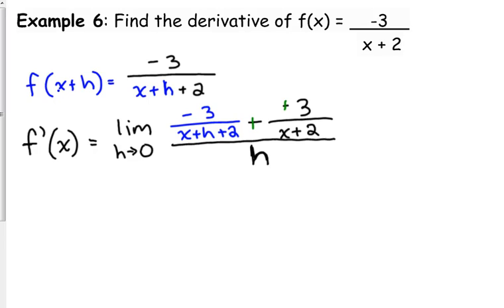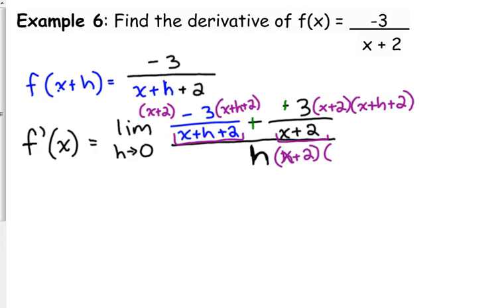Now, do y'all remember what we did when we had to do these limits? If we plug in 0 right now, we're going to end up with 0 over 0. It's a complex fraction. So, we need to multiply by the LCD. The LCD here is kind of big because we've got x plus h plus 2 and x plus 2. So, we've got to go through and multiply everything by both of those. But, the good news is some of that is going to cancel. Don't forget to multiply it on the bottom.